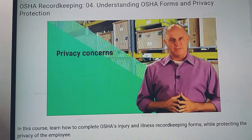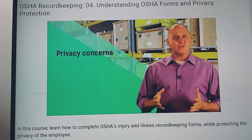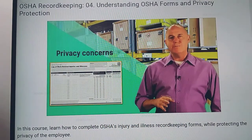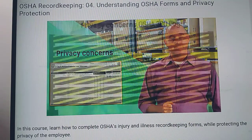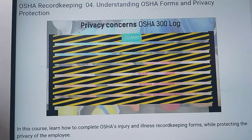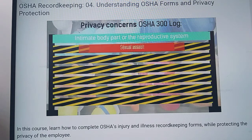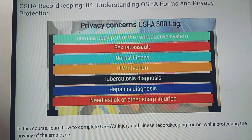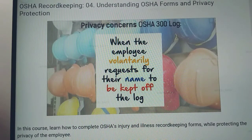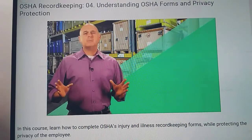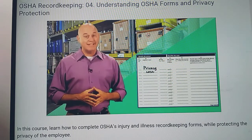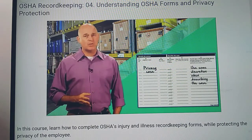Before we wrap up, I need to address privacy concerns. If an employee cites concerns regarding reporting their injury or illness, OSHA has accommodations for these concerns. In some instances, you may not need to enter the employee's name on the OSHA 300 log. These instances include an injury or illness to an intimate body part or reproductive system, an injury or illness resulting from sexual assault, mental illness, HIV infection, tuberculosis diagnosis, hepatitis diagnosis, needle stick or other sharp injuries, or when the employee voluntarily requests for their name to be kept off the OSHA 300 log.